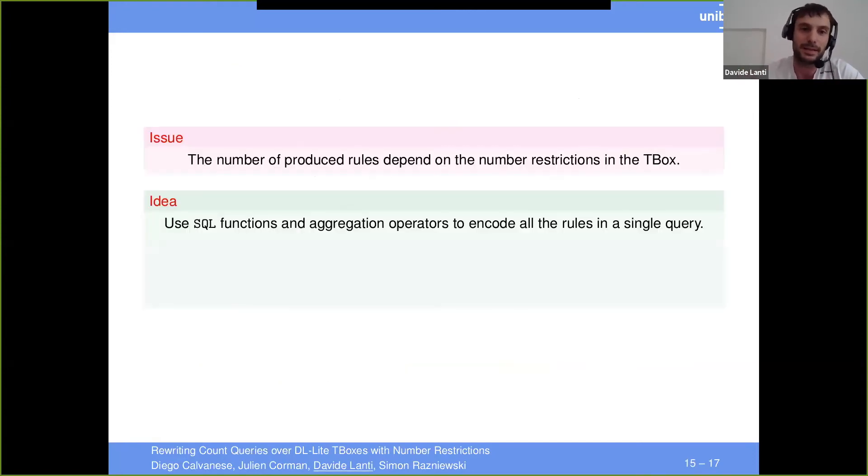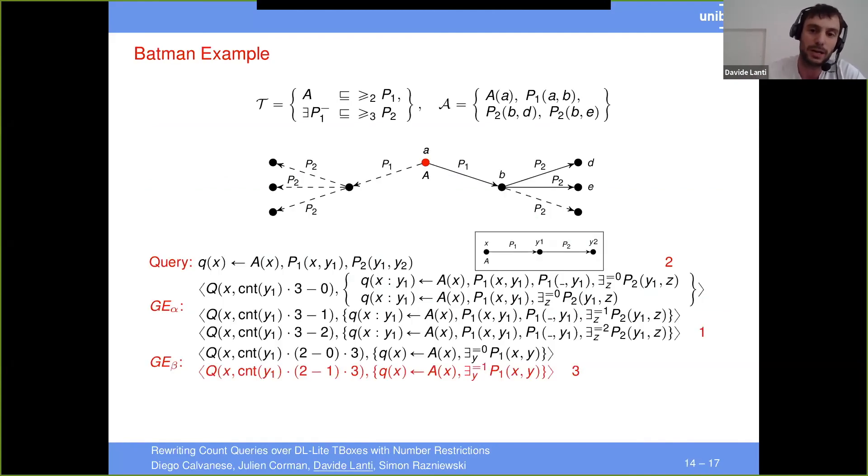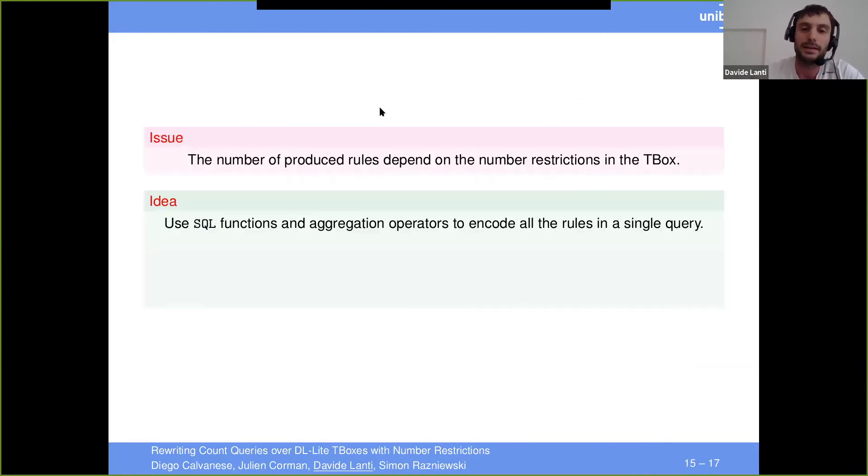Now, the thing is that, as I said, the number of produced rules depend on the number restriction in T-box, because here we produce one rule for each number in between zero and three or two. And the idea for this extension that we had in the DDL workshop is to use, to exploit SQL function aggregation operators to encode all these rules into one single query. So essentially, in particular, we consider count, sum and greatest, and I will show how I do this.